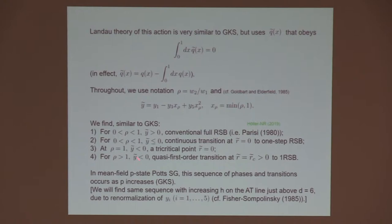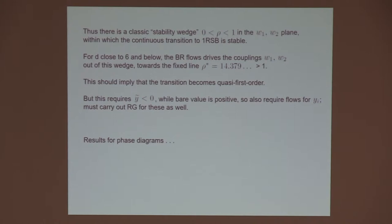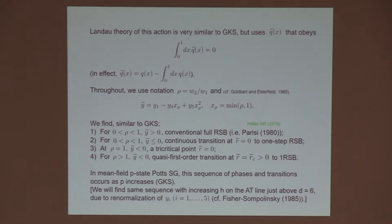Actually, in the mean field P-state POTS spin glass, we get exactly this sequence of phases and transitions as we increase P from 2 to somewhere above 4. In our case, it turns out in the end that we're going to find the same sequence as a function of increasing magnetic field. What's really happening here is an example of a classic stability wedge in the W1-W2 plane. If we go back again, you see the real stable case is number 2 here where we can actually have Y tilde equals 0. At least close to the transition, we get a perfectly good theory even without quartic terms provided rho is between 0 and 1.